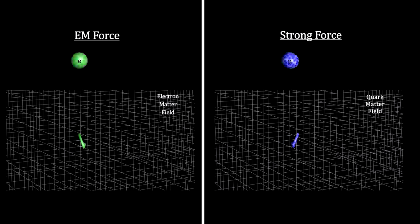We have seen that an electron is a vibrating ripple in the electron matter field. Similarly, a quark is a vibrating ripple in the quark matter field.